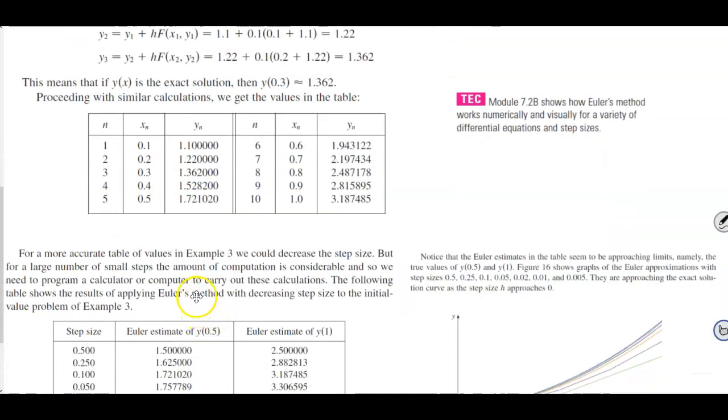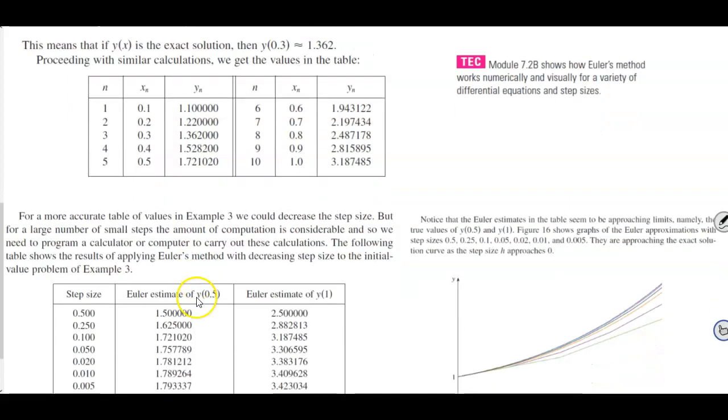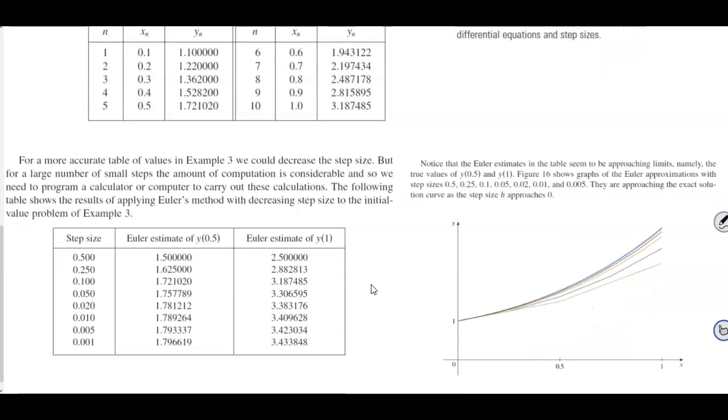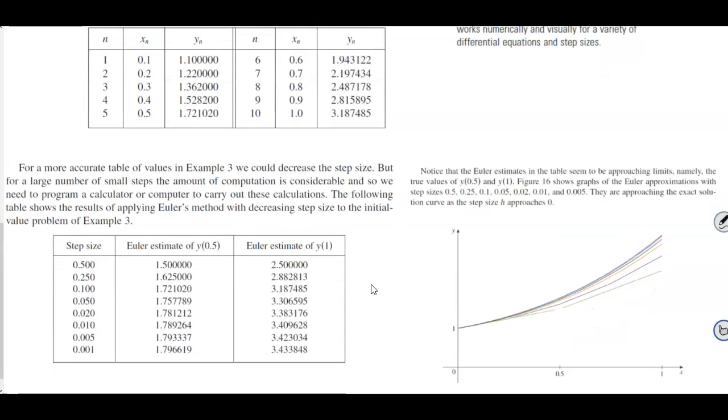Now for a more accurate table of values in example 3, we could decrease the step size, but for a large number of small steps, the amount of computation is considerable, and so we need to program a calculator or computer to carry out these calculations. The following table shows the results of applying Euler's method with decreasing step size to the initial value problem of example 3.